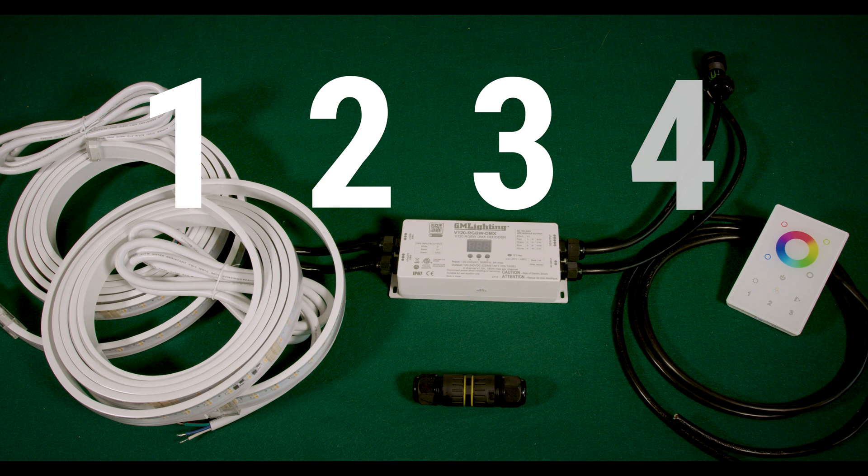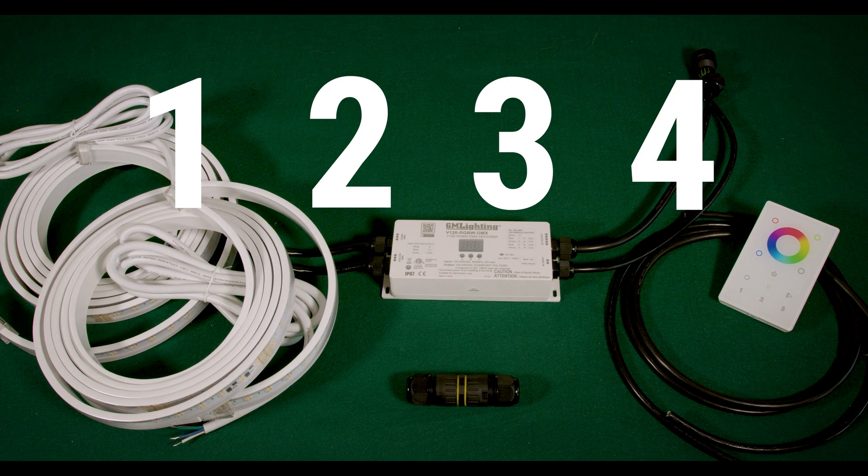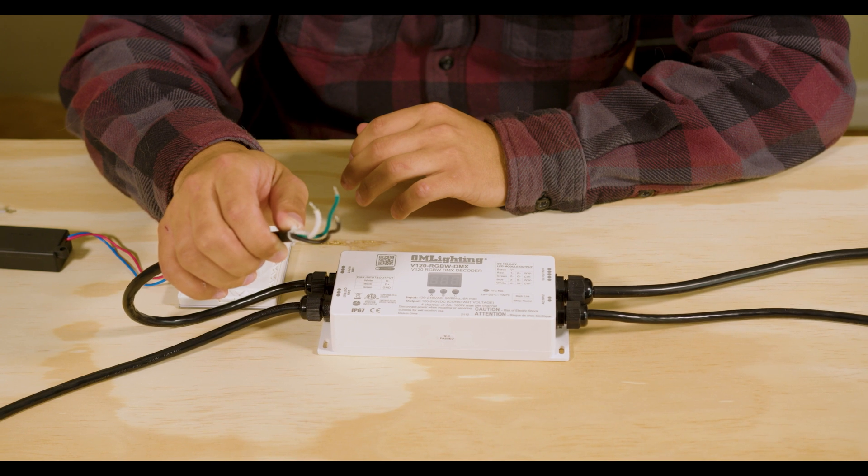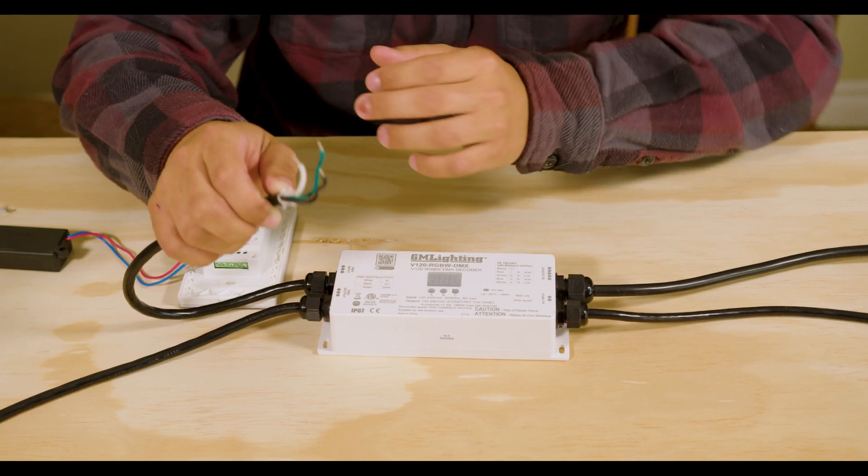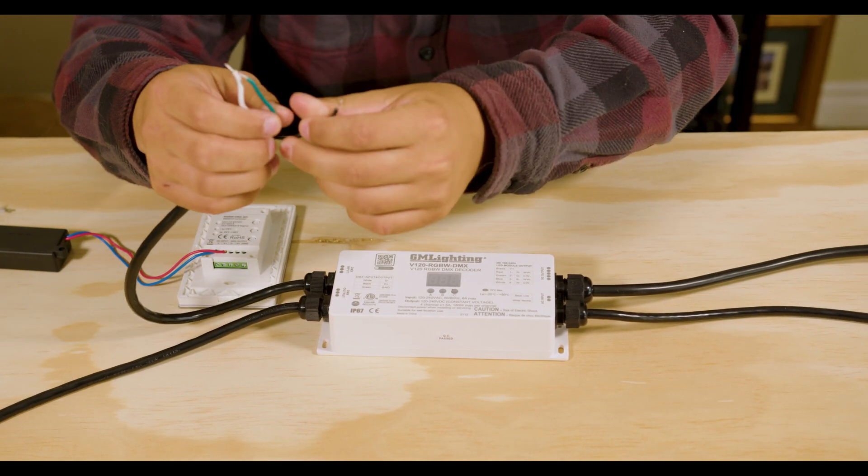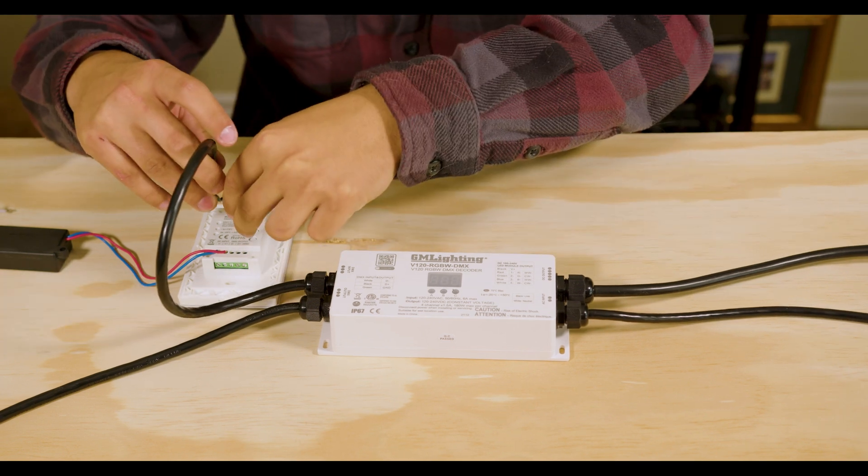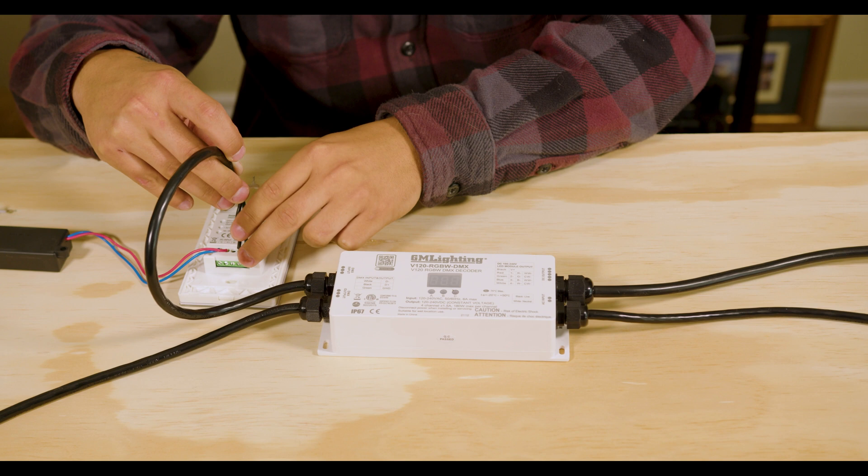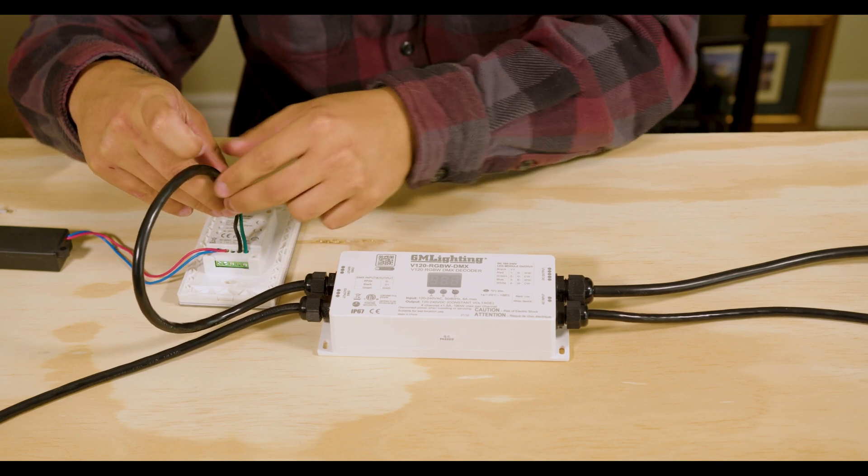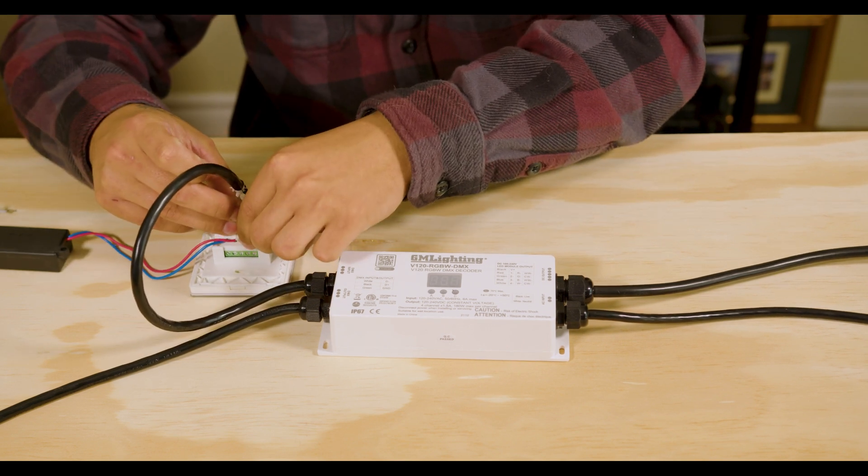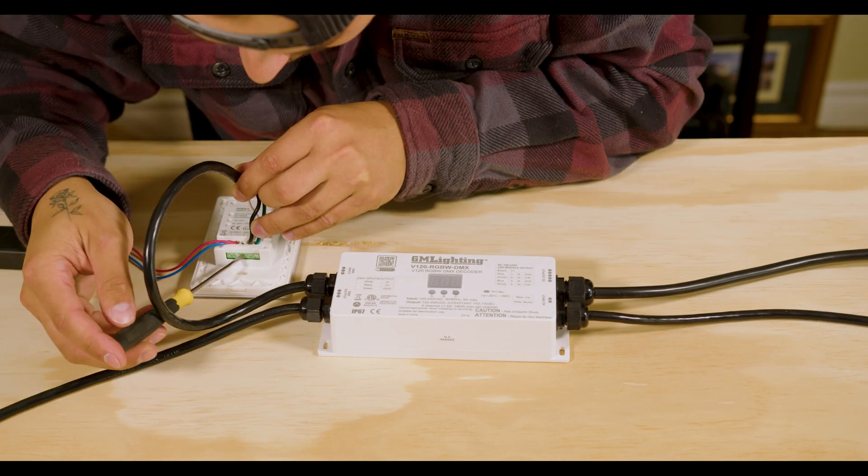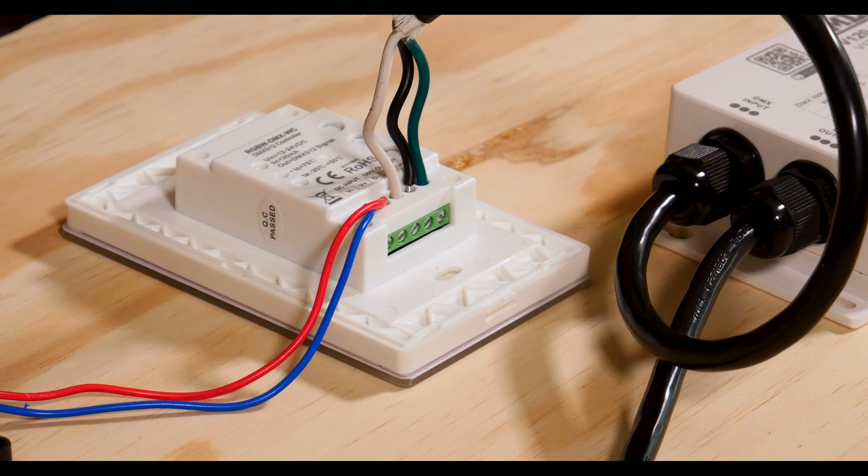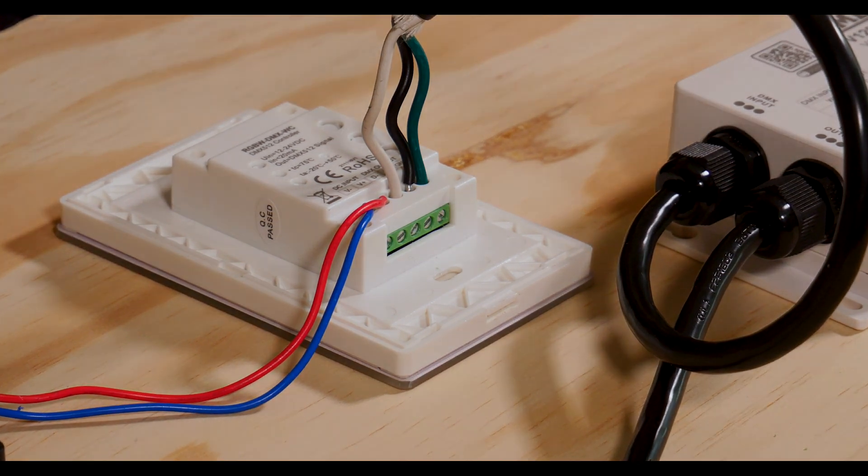Let's connect your V120 RGBW DMX decoder and wall controller. Step 1. Starting with the wall controller's GND terminal, we are going to connect the three wires from the DMX input to the wall controller. The green wire on the right goes to the GND, the black wire in the center goes to D positive, and the white wire on the left goes to D negative. Be aware of the polarity. In this case, black goes to positive and white goes to negative on the wall controller terminals.